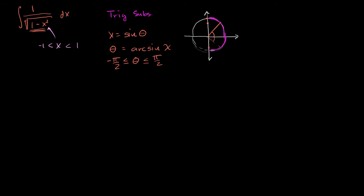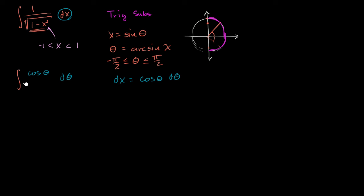Before substituting x, we also need to substitute for dx. Since x equals sine theta, dx equals cosine theta d theta. Our original integral now becomes the integral of cosine theta d theta over the square root of 1 minus sine squared theta. Now, 1 minus sine squared theta equals cosine squared theta — this comes straight from the unit circle definition: cosine squared plus sine squared equals 1. So we can rewrite this as the integral of cosine theta d theta over the square root of cosine squared theta.